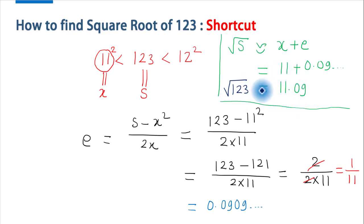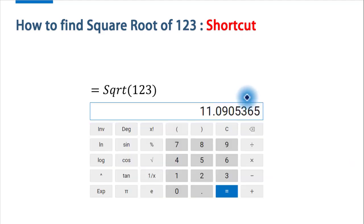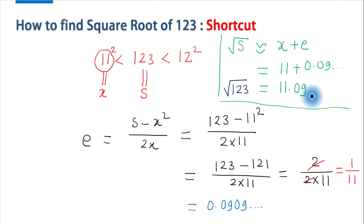If you calculate square root of 123 by calculator it is 11.0905365, which is very close to our approximated value. If you find content of our video useful then give thumbs up. If you are new to our channel please subscribe our channel for more updates.